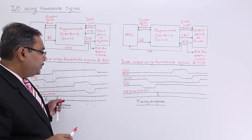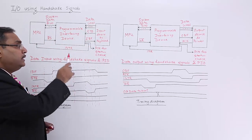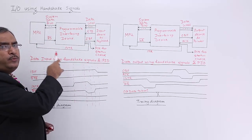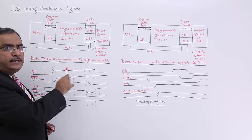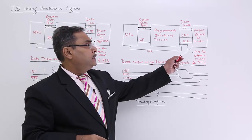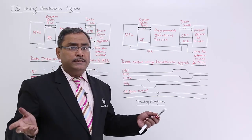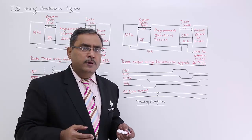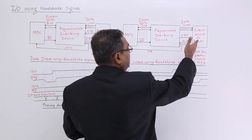In this way the complete cycle takes place. This is the timing diagram and this is the schematic diagram — this is how input devices communicate with the processor unit through handshake signals. Now we consider the output device as a printer, which is a very common example of an output device. Let us see how this output device works.